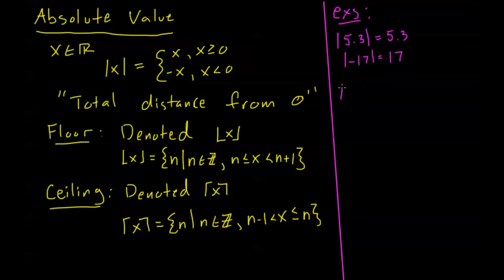So let's do some floor and ceiling examples. If I have the ceiling of 5.3, that's going to be the integer above 5.3, so that's going to be equal to 6. If I have the floor of 7.4, that's the integer below 7.4, so that's going to be 7. Pretty easy stuff.